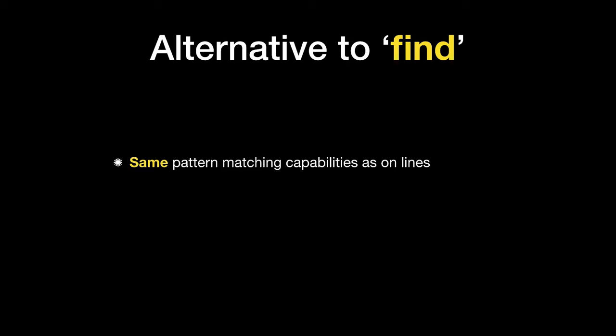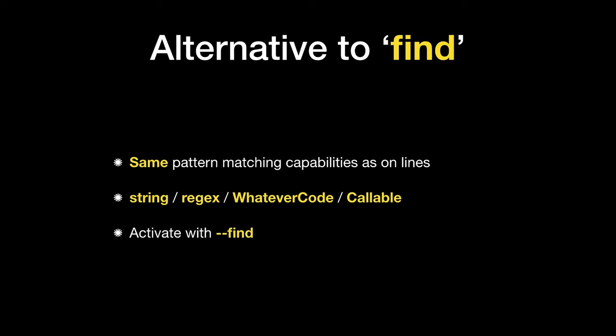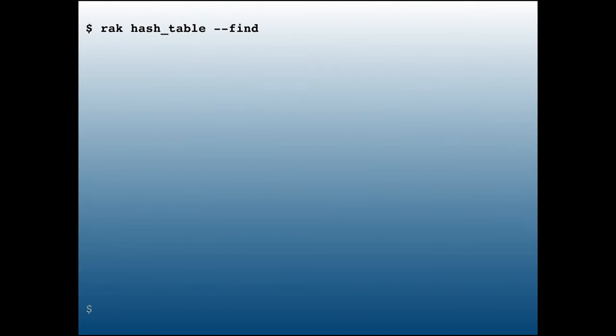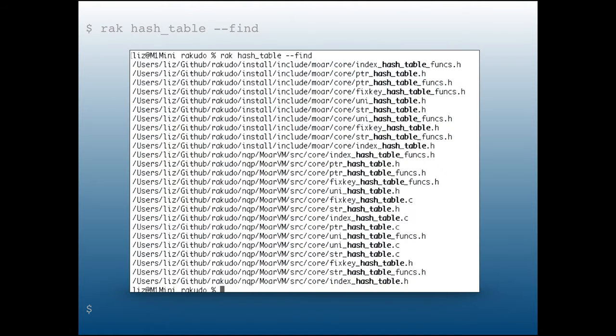I also wanted an alternative to find, with the same pattern-matching capabilities as for lines: string, regex, whatever-code, or callable. You activate it with --find, then tell what to look for. For example, searching for 'hash_table' in the RAKUDO source gives all files where it occurs — most apparently in 'moar', but this gives you a good idea of how it works.